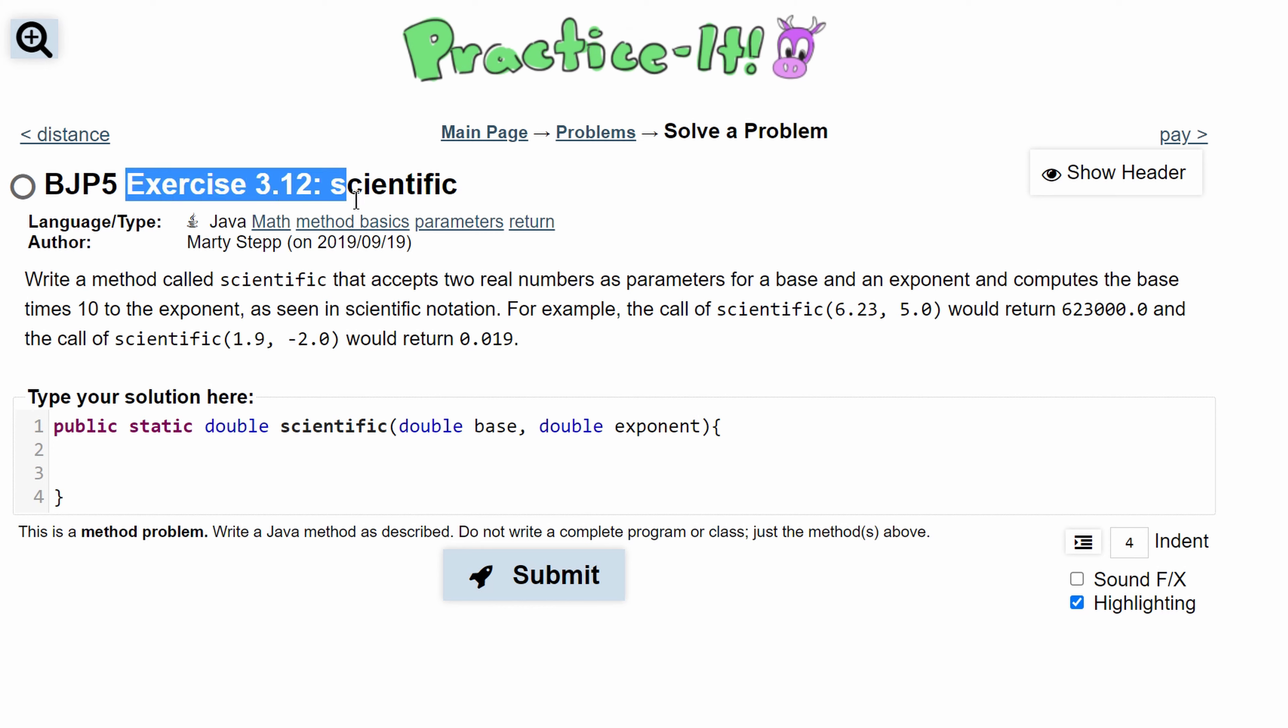For Practice-It exercise 3.12 scientific, we are asked to write a method called scientific that accepts two real numbers as parameters, both being doubles, for a base and exponent, and computes the base times 10 to the exponent as seen in scientific notation.